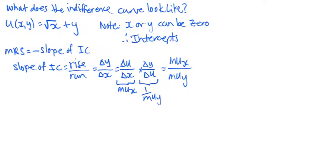So, MRS is MUx divided by MUy. Note that the MRS only has x in it, and no y.